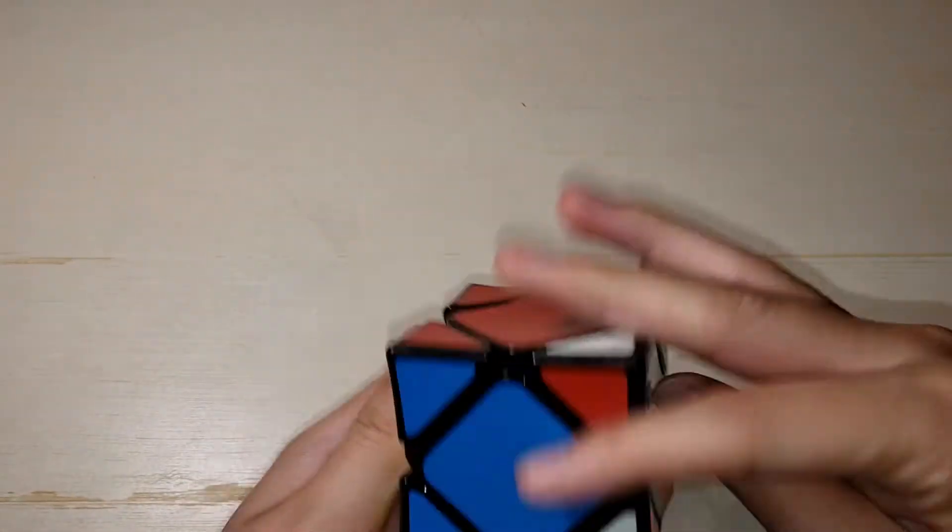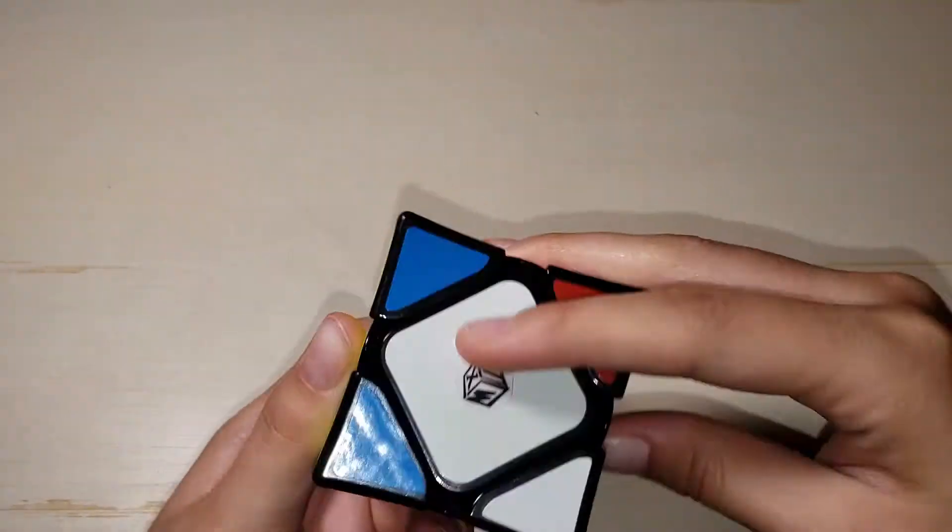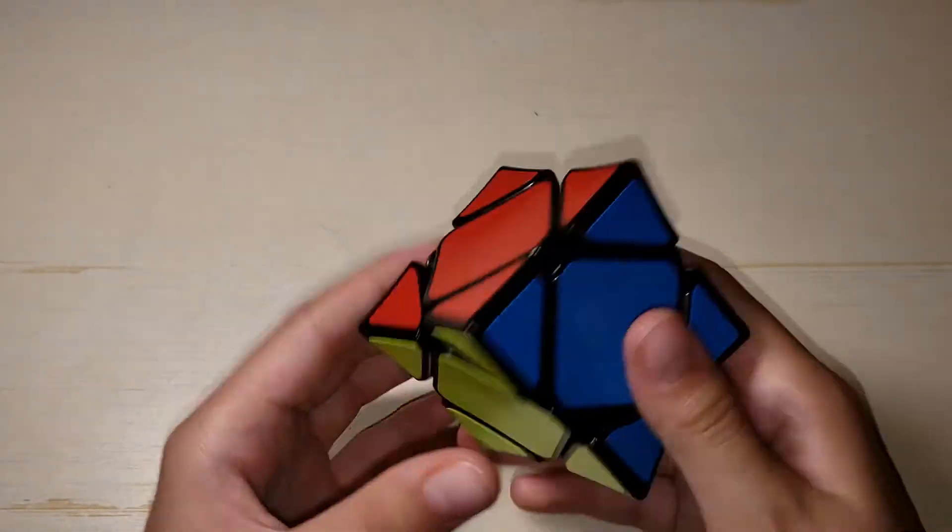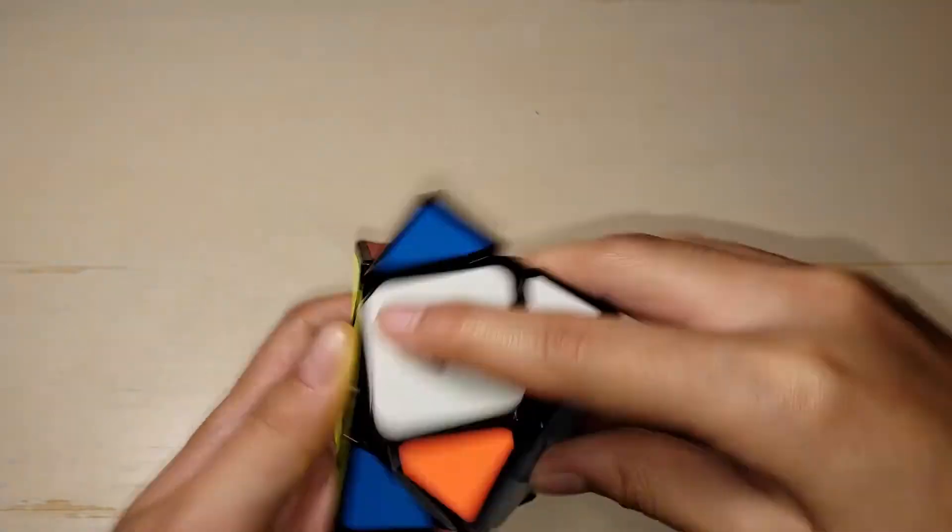I don't know. Like, I don't really care. Or, just like sub 7 average, sub 6 single, I guess. Maybe sub 5, I don't know. I just kind of want a nice single for skew, that's all.